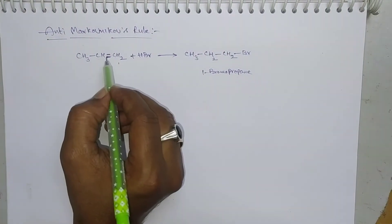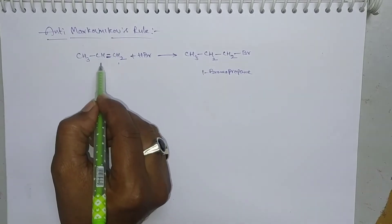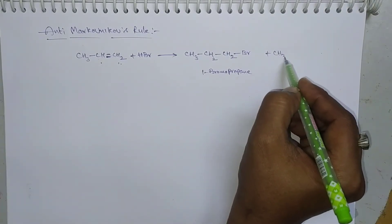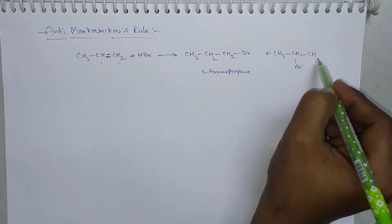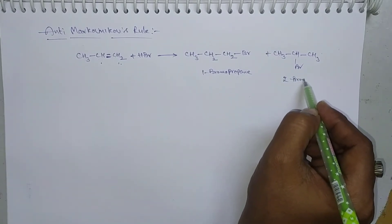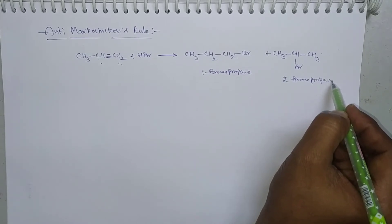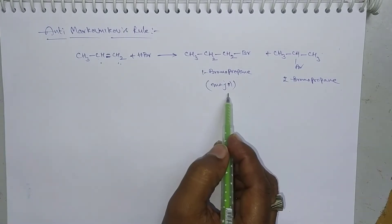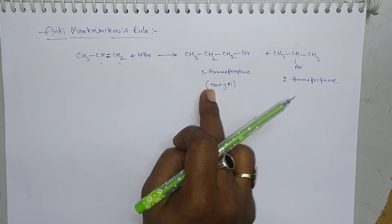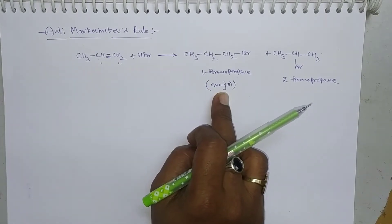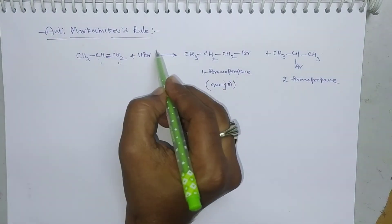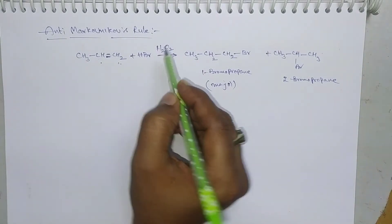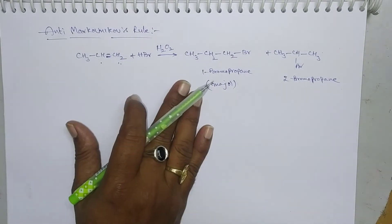There is also a chance of getting another product. If Br is added to the middle carbon and hydrogen to the terminal carbon, the product will be CH3–CHBr–CH3, which is 2-bromopropane. Between these two products, 1-bromopropane is the major product according to anti-Markovnikov's rule. This reaction takes place in the presence of peroxide, such as H2O2 or any other peroxides.